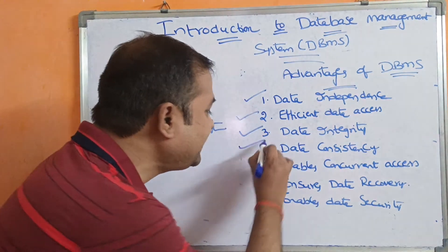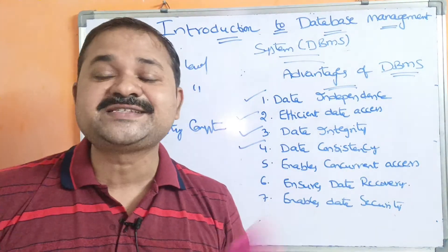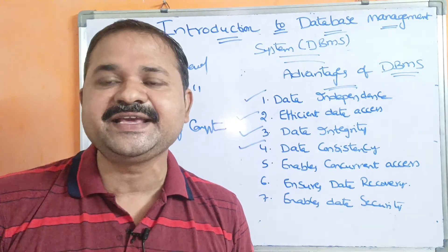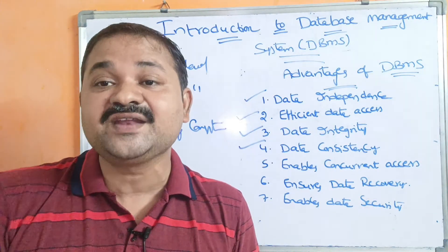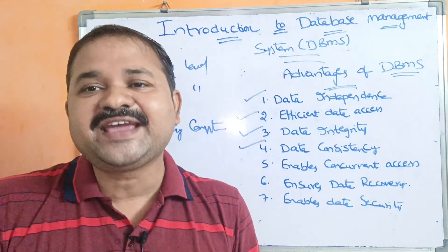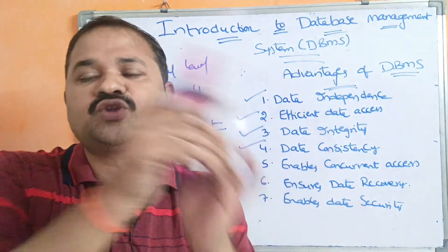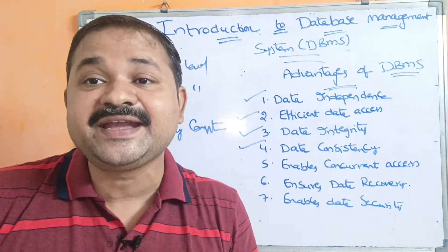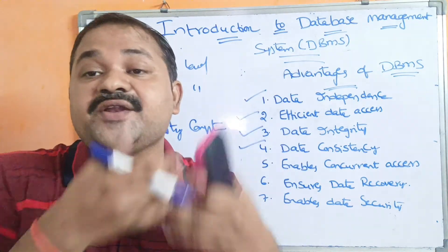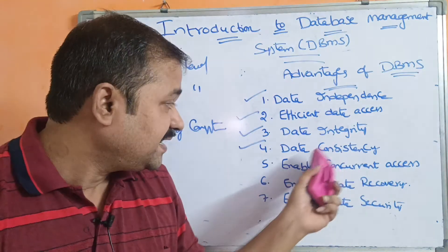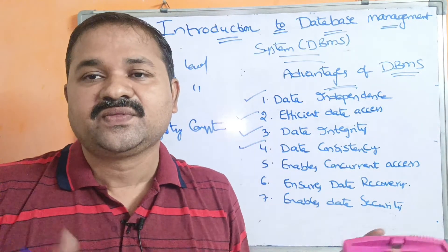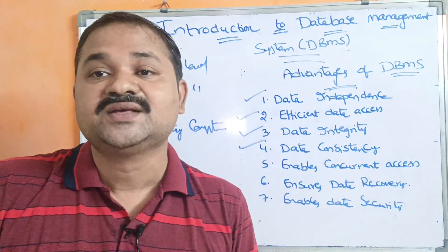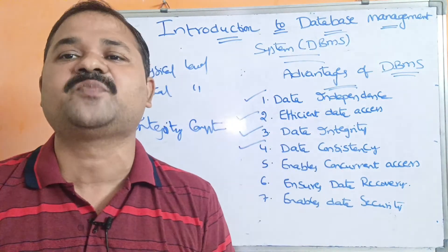Now let us see data consistency. The best example is transferring money between two bank accounts. We can transfer money only if both accounts are updated correctly. If they are not updated correctly, the state is inconsistent. Consistency means both accounts must be updated correctly before the operation is performed.